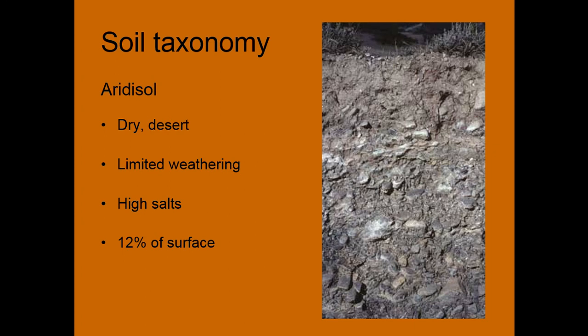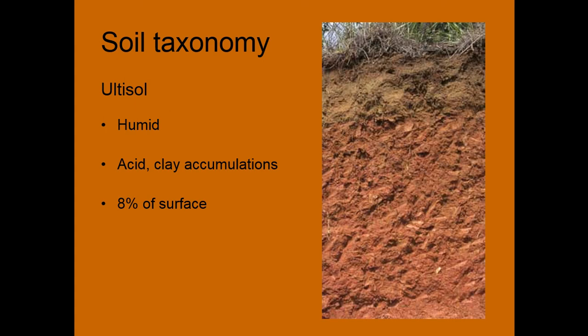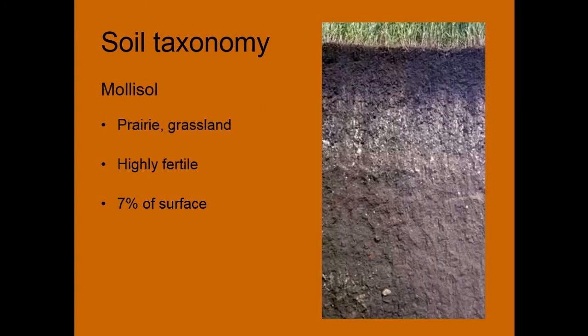Next we have Aridisols — so arid — these are our dry desert soils. They often have limited weathering because of the low moisture, and then high salt content because water moves up through the soil profile and evaporates at the surface, leaving behind that salt. They cover about 12% of the planet's surface. Ultisols are found in humid areas — often acidic with clay accumulations, which you can see in the red color, about 8% of the soil surface. Mollisols are our prairie or grassland soils. They're highly fertile due to a very rich and deep organic matter horizon, which we use to identify them.